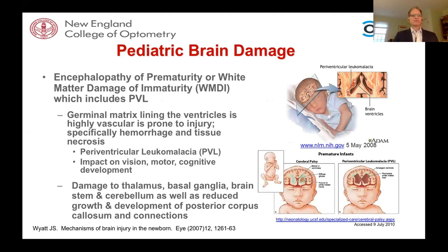Various terms describe the brain damage. One term is encephalopathy of prematurity or white matter damage of immaturity, both of which include PVL — periventricular leukomalacia — where the white matter linings of the ventricles become damaged as a result of encephalopathy due to immature immune response, immature vascularization, and an inability to deal with inflammatory issues. It could also include damage to the thalamus, basal ganglia, brain stem, and cerebellum, as well as reduced growth of the posterior corpus callosum and its connections.